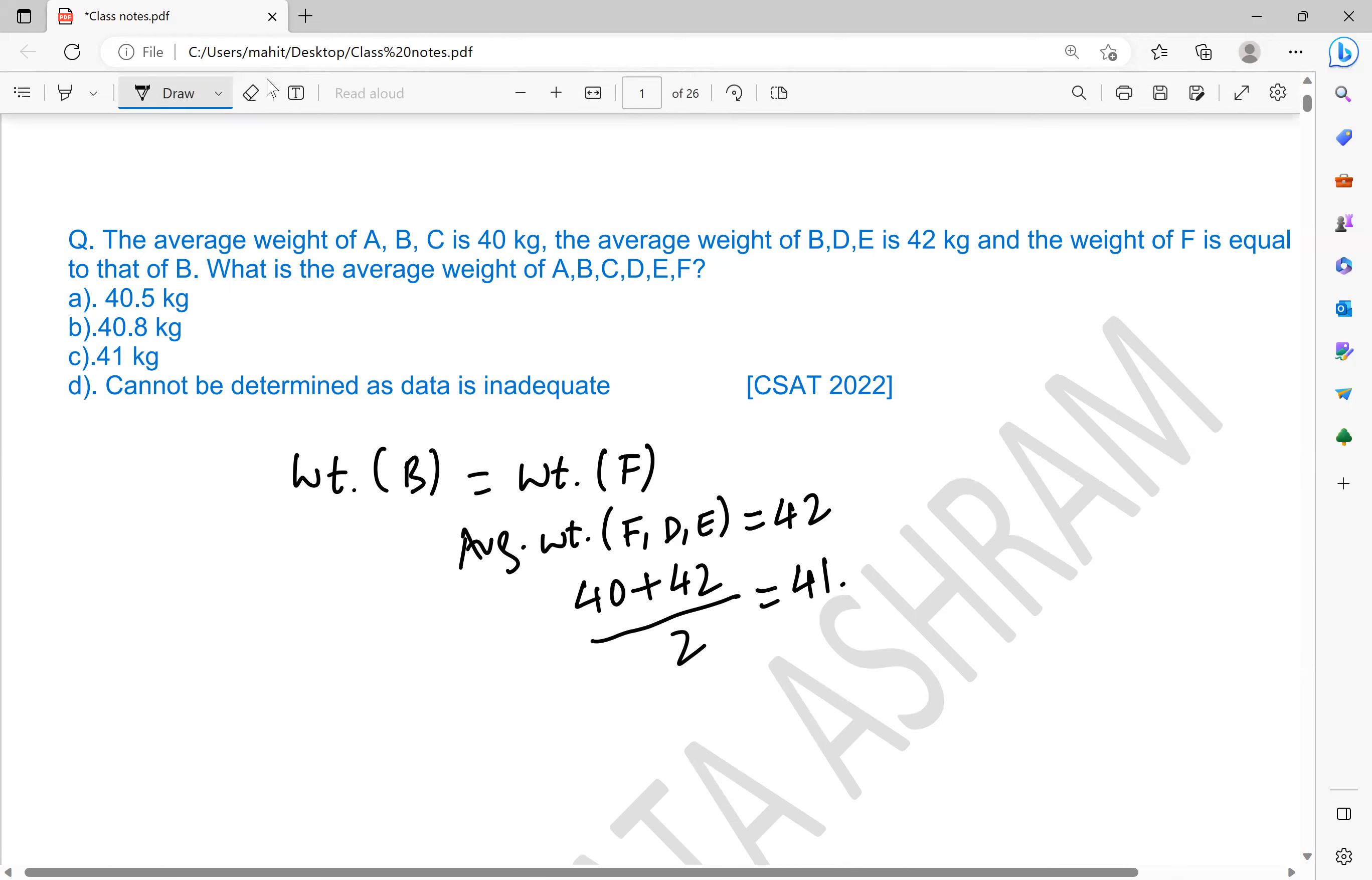Now how did we obtain this shortcut? Focus that here, average weight of A, B, C is 40, so the total weight of A, B, C will be 40 times 3. Average weight of F, D, E is 42, so the total weight of F, D, E would be 42 times 3.